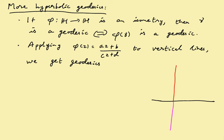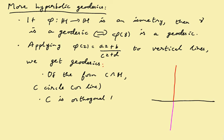Well, we get geodesics. What do they look like? They are of the form c intersection h, c circle or line, of course, in general. But we also know something else about it. What we know, upper half plane, c is orthogonal to h.